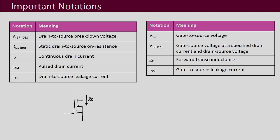This is your drain current I_D, this is your drain, source and gate, and then you have the drain-to-source voltage V_DS. The important notations in your data sheet include the drain-to-source breakdown voltage — this is the maximum voltage the MOSFET can block across it. Then another important one is your R_DS_on, the static drain-to-source on-resistance, which is basically whatever resistance is associated with the MOSFET while it is conducting.